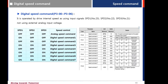For example, if you want to use digital speed command 3, firstly set the speed value in parameter P302, and then set digital input signal speed 1 and 2 on, and speed 3 off.